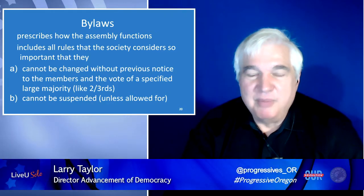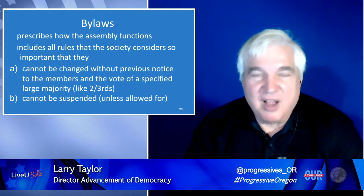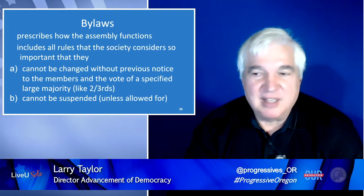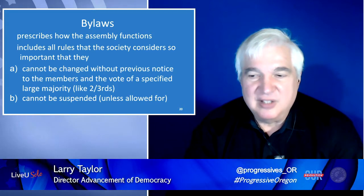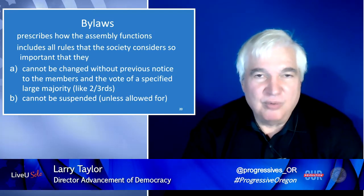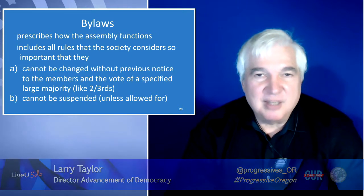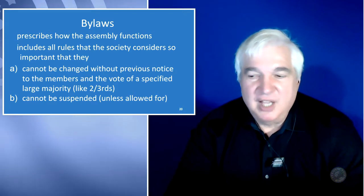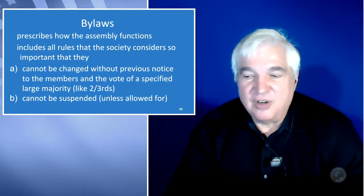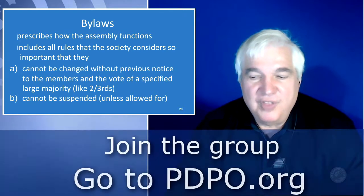Beneath bylaws are the rules of order, and I'm going to be talking about this hierarchy in the next couple of slides. The bylaws are written by your group, and what they do is prescribe how the assembly functions, including all rules that the society considers important.